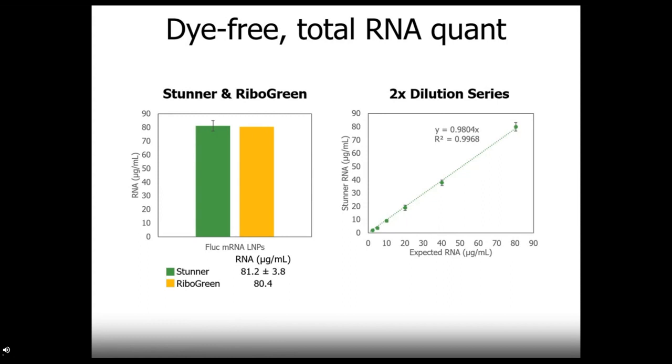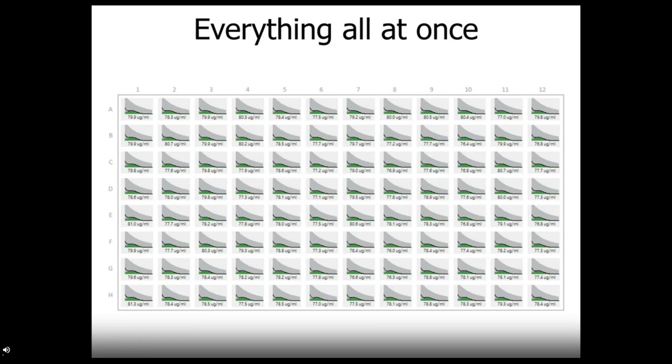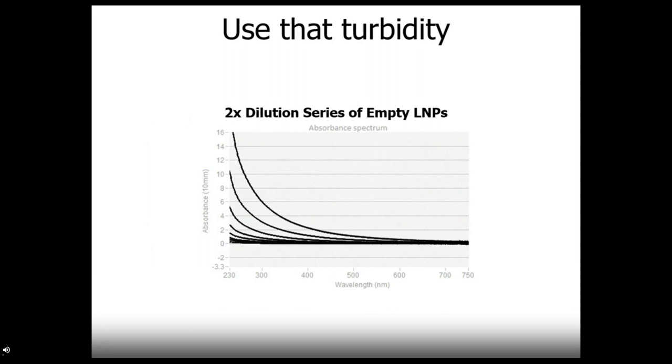Stunner's RNA concentrations agree closely with the total messenger RNA concentration determined by ribogreen. On the left is a Stunner measurement with N equals 7, and comparing that to total RNA concentration determined with ribogreen. You can see they closely agree. A two-fold dilution series of firefly luciferase messenger RNA LNPs showed highly linear results down to 1.2 micrograms per milliliter. Error bars are plus or minus one standard deviation. And Stunner gets you everything all at once. Not only DLS results on 96 samples of LNPs in about an hour, but at the same time you get your RNA concentration, all from that same 2 microliters sample.